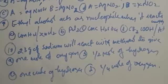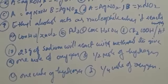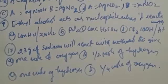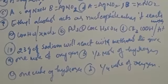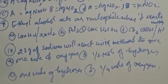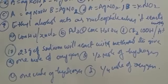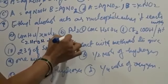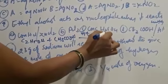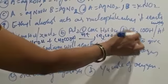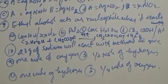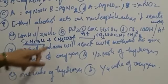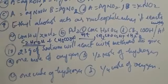Ethyl alcohol acts as a nucleophile when it reacts with acetic acid. During esterification, ethyl alcohol reacts with acetic acid in the presence of an acid catalyst: C₂H₅OH + CH₃COOH → CH₃COOC₂H₅ + H₂O. In this reaction, C₂H₅O⁻ acts as the nucleophile. This is a nucleophilic substitution reaction.